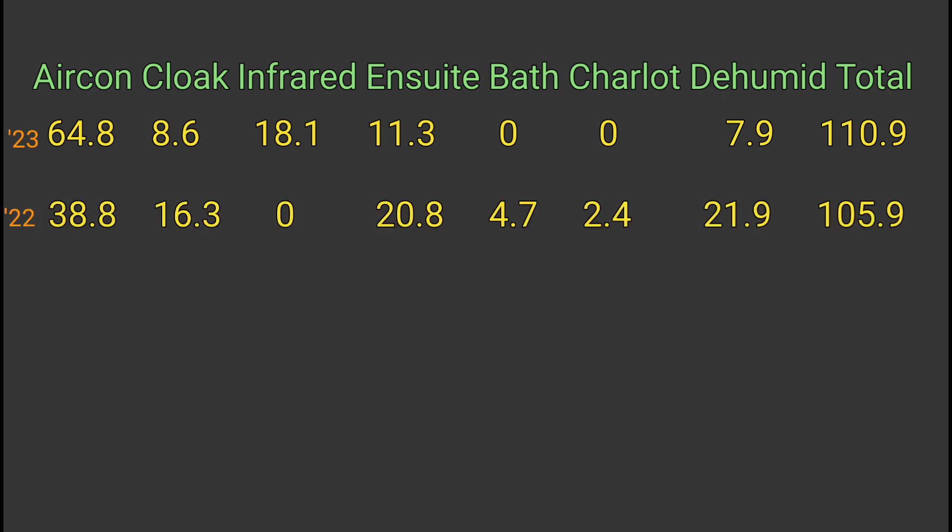Compared to last year: starting with the total, 105.9 kilowatt hours versus 110.9 — it's actually quite similar. But the air conditioning: we've used a lot more this year at 64.8 versus 38.8 last year. We did light the log fire four times this year versus only once last year, so we've saved a bit of heating there too. Cloakroom is 8.6 versus 16.3 last year, but we've added the infrared heater this year at an extra 18.1 kilowatt hours, so that room has been warmer. The ensuite we've used considerably less this year, and we saved six or seven kilowatt hours by not using the bathroom or Charlotte's bedroom at all.